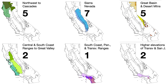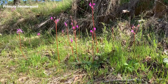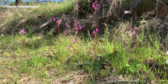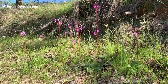Since most species have a limited distribution range, knowing what species occur in your area can help with identification. The northwest coast to the Cascades has five species; the Sierra Nevada has seven; the Great Basin and Desert Mountains have five; the Central Coast ranges, South Coast ranges, and Great Central Valley have two; the South Coast inland to the low elevation peninsular and transverse ranges has one; and the higher elevations of the transverse ranges and San Jacinto range have two. Nearly everywhere you go in California, you can enjoy shooting stars.